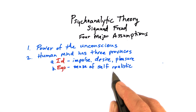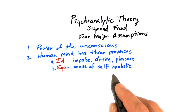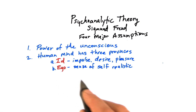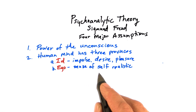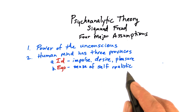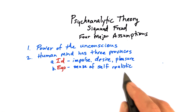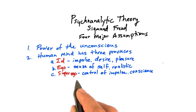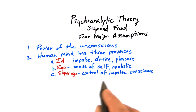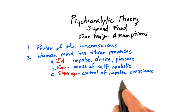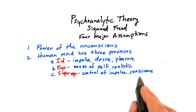The second province of mind was what he called the ego, which is our sense of self, and it's realistic. Finally, we have the superego — the sense of control of our impulses, conscience, knowing right from wrong.